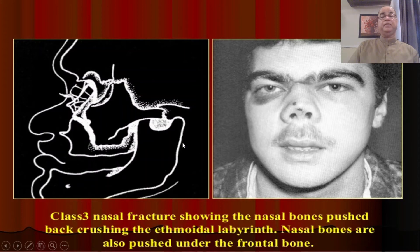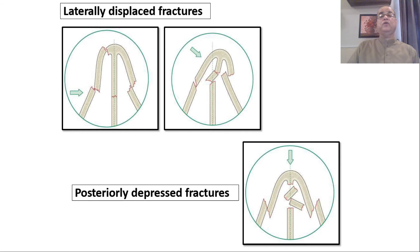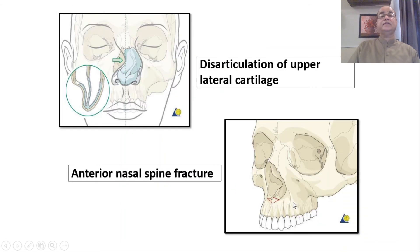In plane three, the ethmoidal labyrinth may also be involved. The AO classification describes: laterally displaced fractures, posteriorly depressed fractures, disarticulation of the upper lateral cartilages laterally, anterior nasal spine fracture, and involvement of the nasal septum. Diagrammatically, laterally displaced fractures are shown, then posteriorly depressed fractures, then disarticulation where the nasal bones are intact but the upper lateral cartilages are displaced laterally, and dislocation of the nasal septum from the anterior nasal spine.